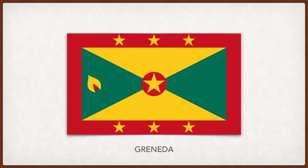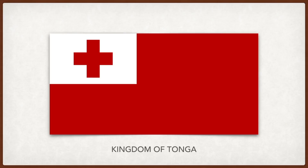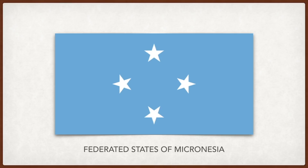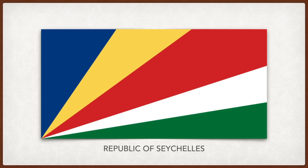Micronesia: the blue represents the Pacific Ocean and the four stars represent the states in the federation. Seychelles: the pattern symbolizes the new country moving into the future. The blue is for the sky and sea, the yellow is for the sun, the red represents the people and their determination to work in unity and love, the white represents social justice and harmony, and green represents the environment.